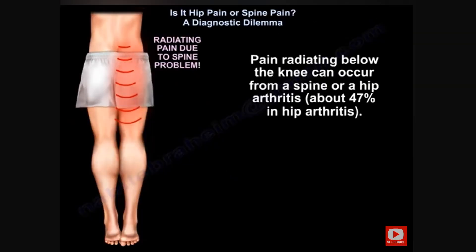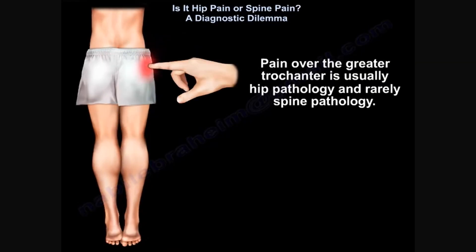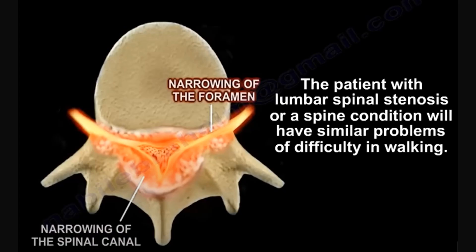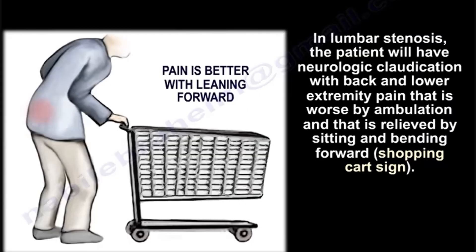Pain radiating below the knee can occur from spine or hip arthritis — about 47 percent in hip arthritis. Pain over the greater trochanter is usually hip pathology and rarely spine pathology. The patient with lumbar stenosis will have neurogenic claudication with back and lower extremity pain. In lumbar stenosis, pain is worse with ambulation and relieved by sitting and bending forward — this is called the shopping cart sign.